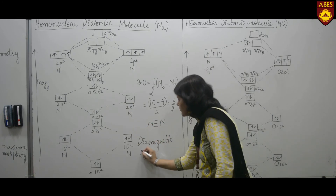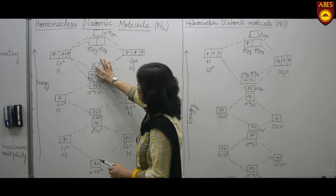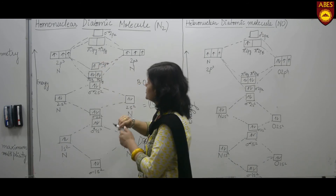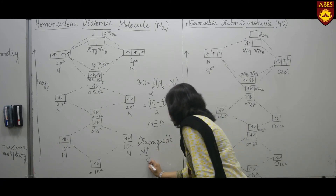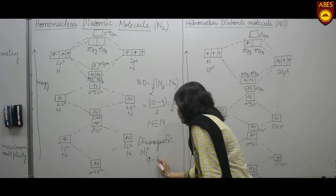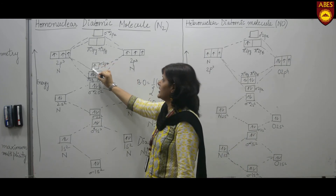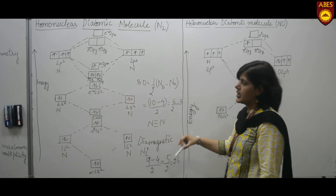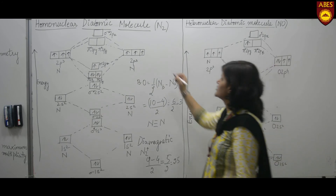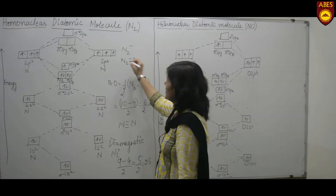If we discuss the case of N₂⁺, one electron is removed from the outermost orbital, the one highest in energy. Now we have 9 bonding electrons and 4 anti-bonding electrons, giving a bond order of 2.5. This one unpaired electron imparts paramagnetic behavior to N₂⁺. Likewise, we can draw diagrams for N₂⁻ and N₂²⁻ similarly.